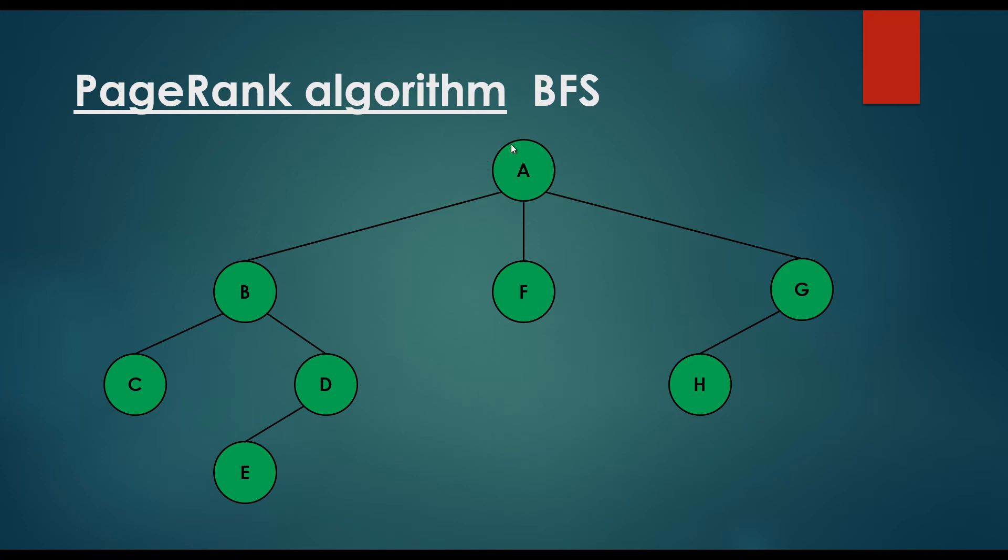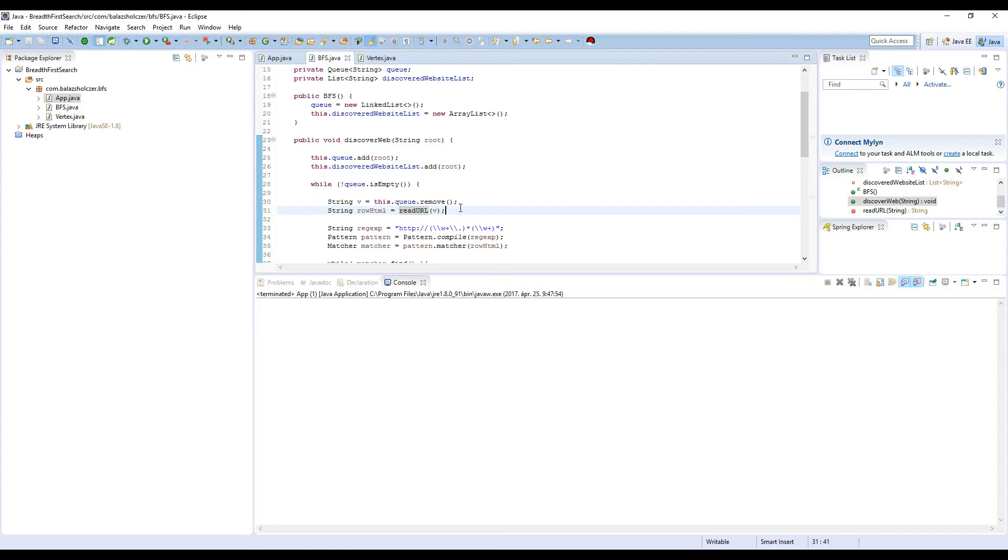As you may recall, we visited the first node, then we visited the second layer of the graph, then the third layer, then finally the last layer. This is why we like breadth-first search. Depth-first search, on the other hand, is going to go as deep into the graph as possible, and we don't want to do that for web crawling. So this is how breadth-first search works.